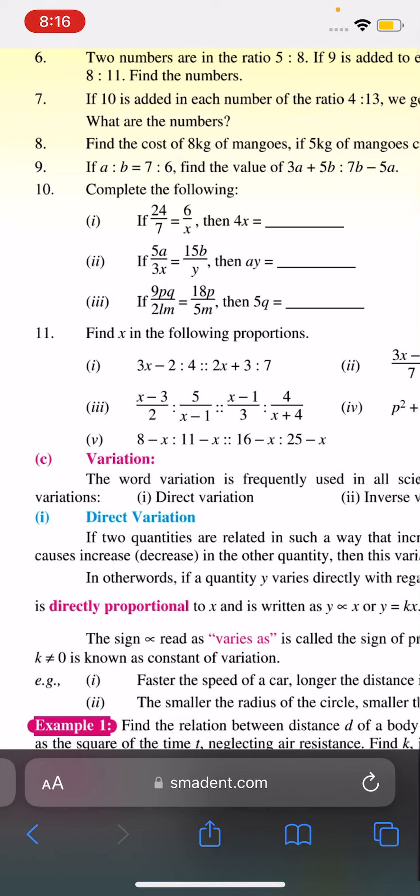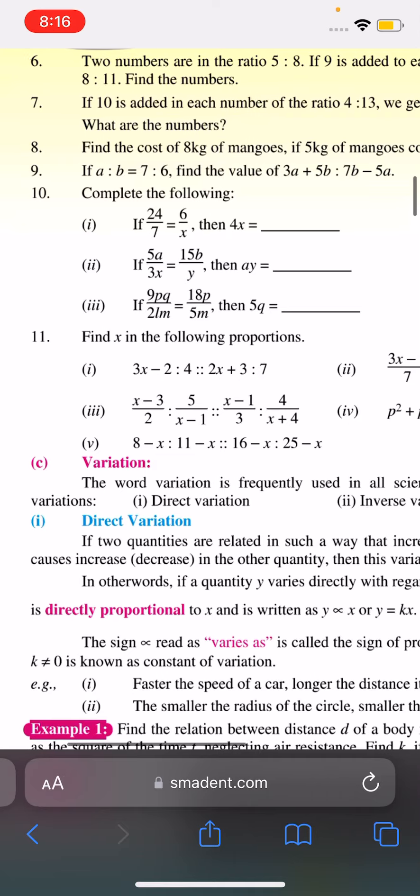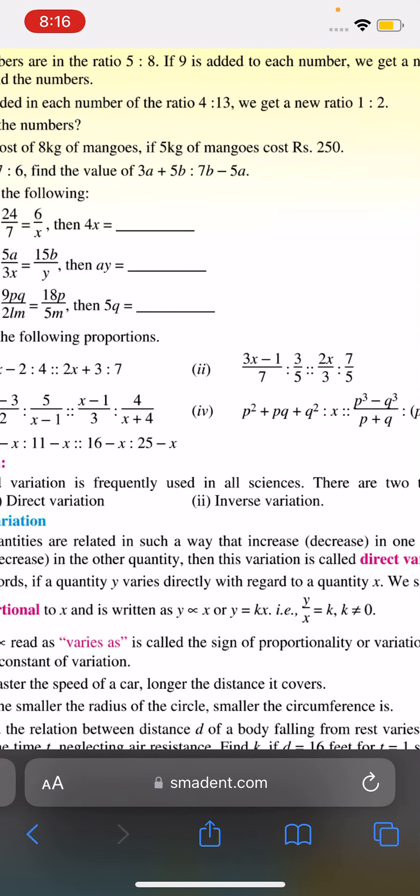Direct variation: if two quantities are related in such a way that increase or decrease in one quantity causes increase or decrease in the other quantity, then this variation is called direct variation.